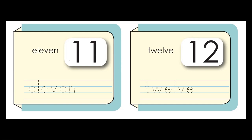Eleven — how do we spell eleven? E-L-E-V-E-N, eleven. Say it one more time: E-L-E-V-E-N, eleven. Twelve — how do we spell twelve? T-W-E-L-V-E, twelve.